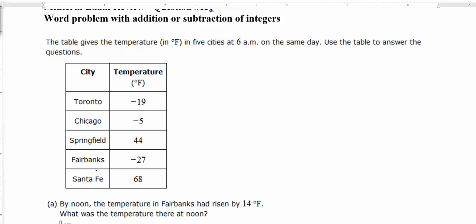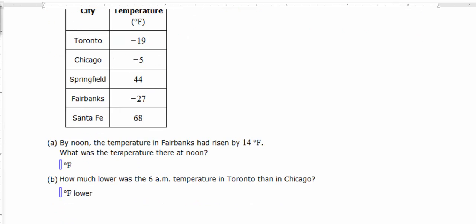So on the left-hand column is our city, and on the right-hand column is our temperature. Let's read the first part of the problem. It says, by noon, the temperature in Fairbanks had risen by 14 degrees Fahrenheit. What was the temperature there at noon?